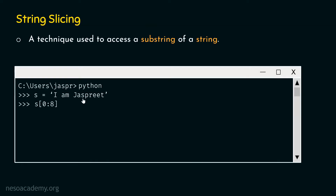The last index of this string is 7. If we start counting: this character has index 0, this whitespace character has index 1, this character A has index 2, this character M has index 3, this whitespace character has index 4, this character J has index 5, this character A has index 6, and this character S — which is the last character of this substring — has index 7. Here, we need to specify the last index plus 1, so we type 7 plus 1, which is 8. If we hit enter, we will get this substring: 'I am just'.